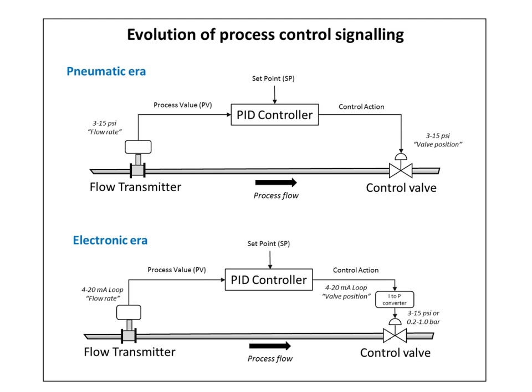The introduction of DCSs and SCADA allowed easy interconnection and reconfiguration of plant controls such as cascaded loops and interlocks, and easy interfacing with other production computer systems. It enabled sophisticated alarm handling, introduced automatic event logging, removed the need for physical records such as chart recorders, allowed the control racks to be networked and thereby located locally to plant to reduce cabling runs, and provided high-level overviews of plant status and production levels.